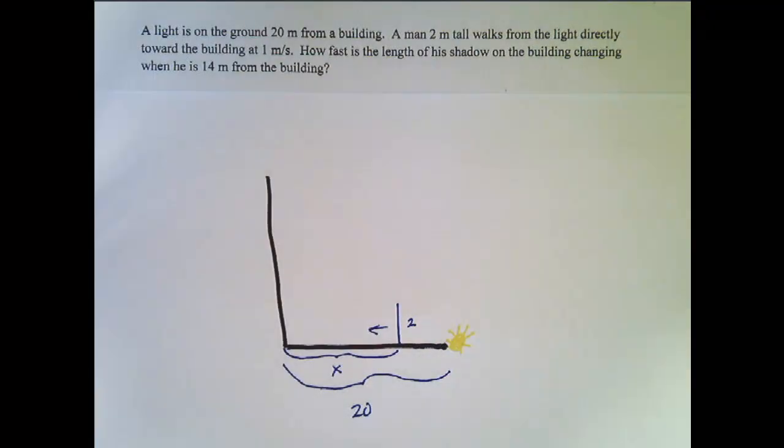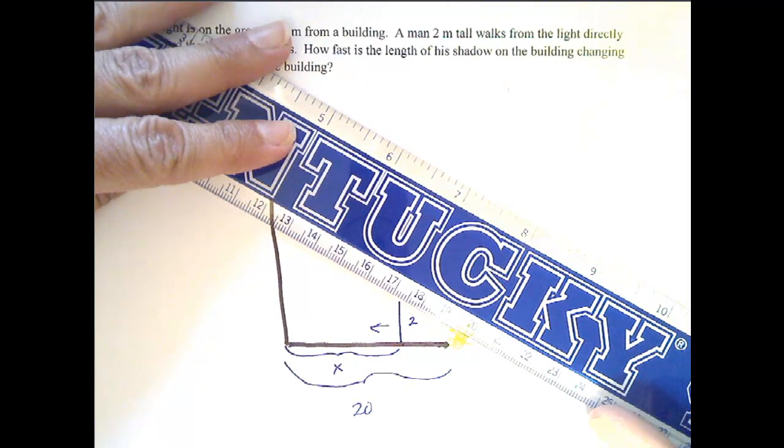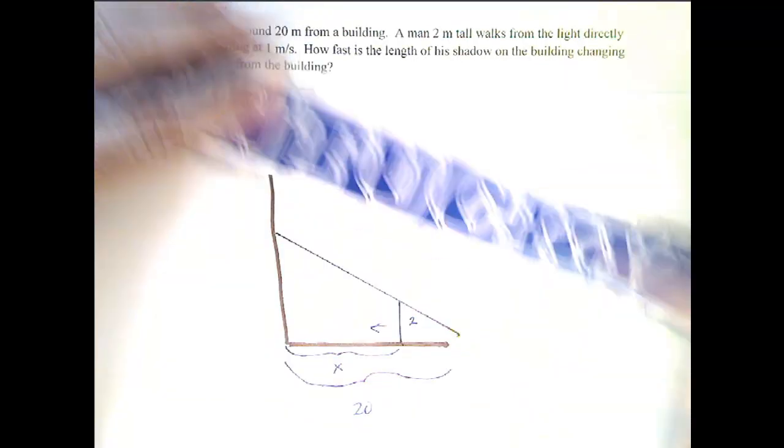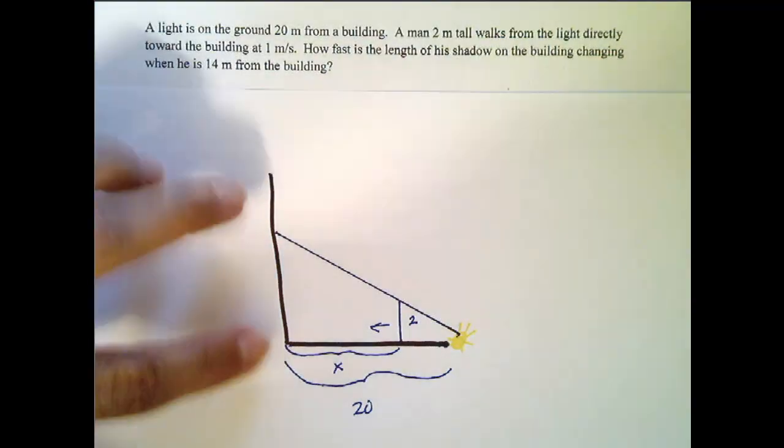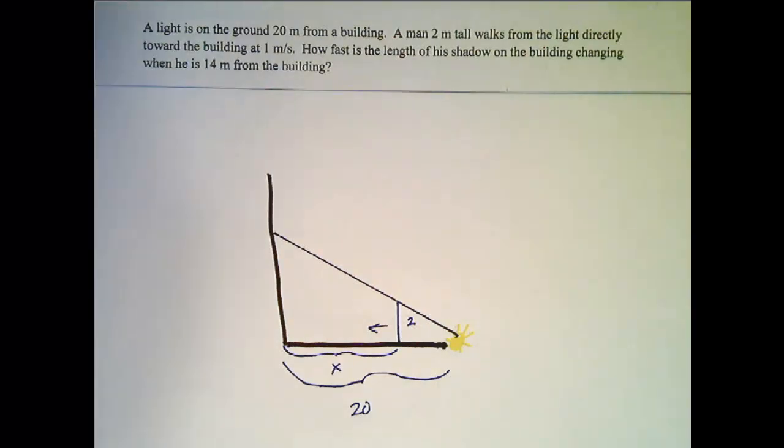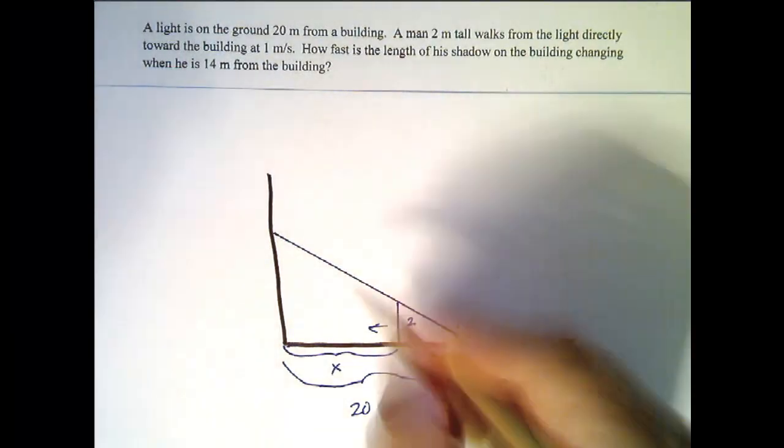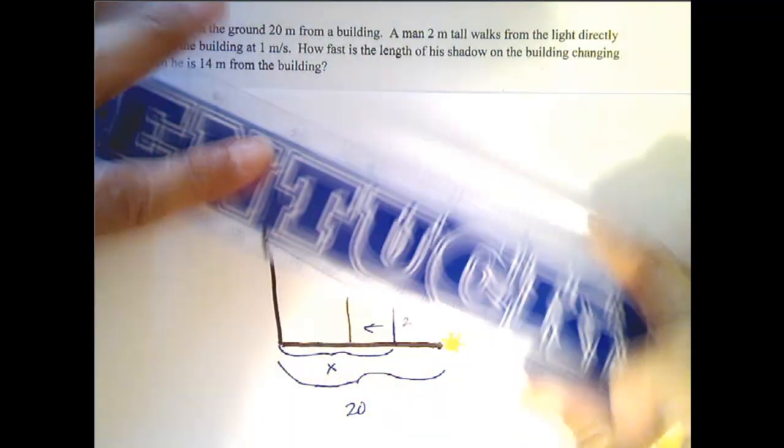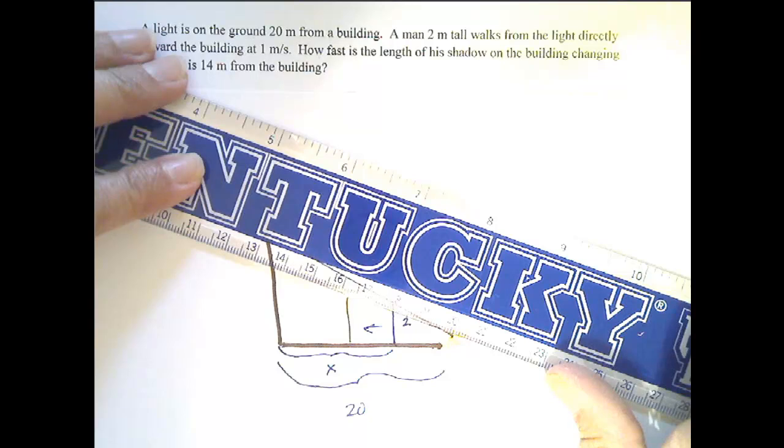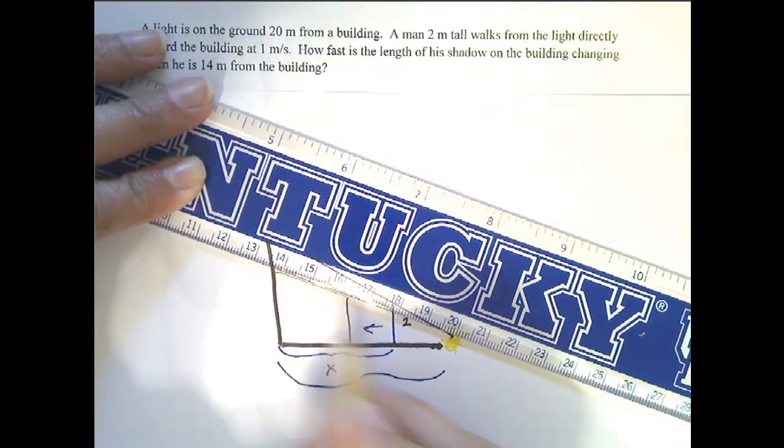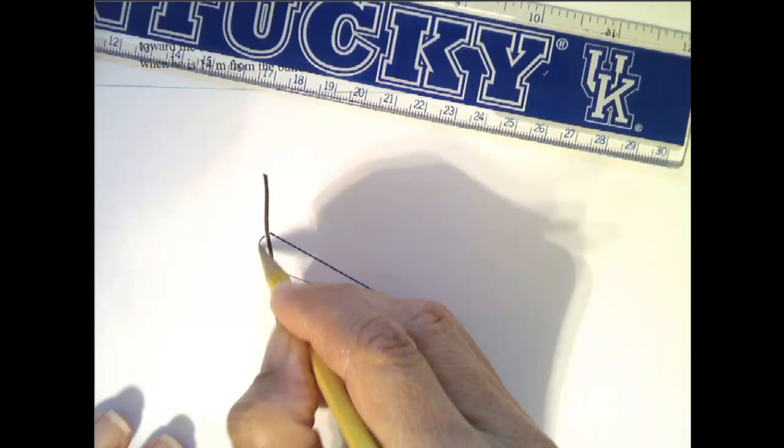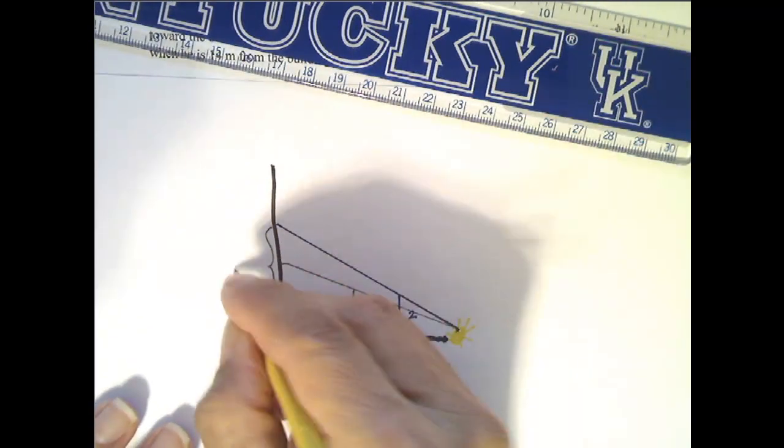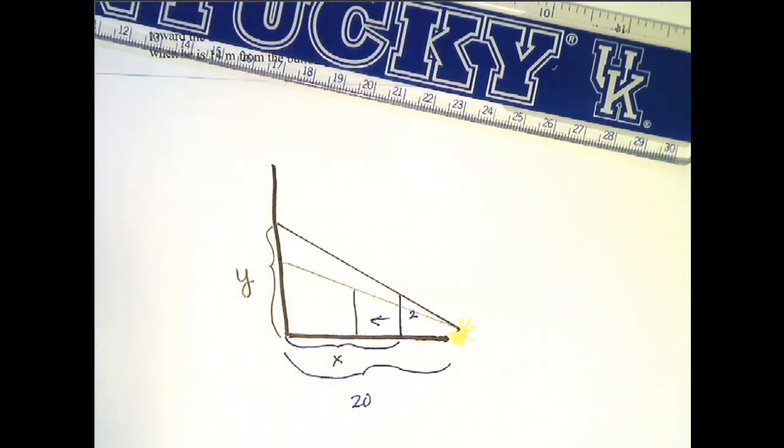so the sun comes up behind the man, and makes a shadow on the wall of the building, on the side of the building. Now notice, if he is closer, so here he's still 2 meters tall here, but the shadow that is cast is smaller. So this length of the shadow is definitely changing, so we'll give it a variable name, and why don't we go ahead and call it Y.